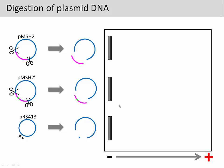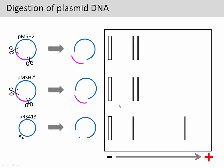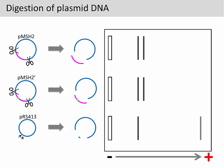You can perform an electrophoresis to determine the size of the resulting fragments. As you can see here, pMSH2 and pMSH2 prime have very similar digestion patterns, while the empty vector will produce a different pattern. This small band here represents the small fragment.